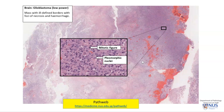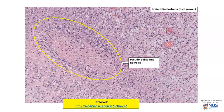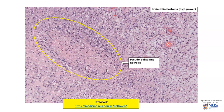Microscopically, glioblastomas show all the features of high-grade tumors. They will be hypercellular with mitotic figures, and the nuclei of the malignant astrocytes will be pleomorphic, with variation in size and shape. These pictures are taken from the Pathweb online pathology resource. There is also a very characteristic feature known as pseudo-palisading necrosis: a central area of necrosis with an amorphous granular appearance and pyknotic nuclei, bordered by a palisading pattern of viable tumor cells. These areas of necrosis are often elongated or serpigenous in shape, bordered by palisades of viable malignant cells.